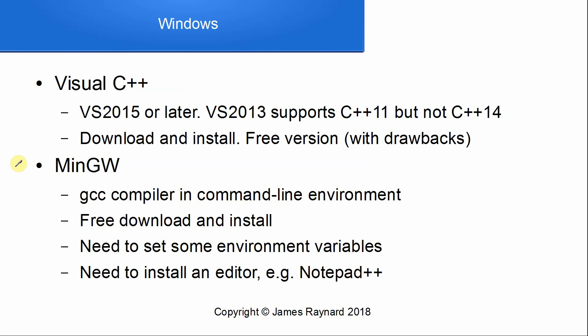There are other commercial products for Windows as well, but the main alternative is to get a free open-source compiler designed for a Unix environment and then get a supporting environment to run it in. MinGW is the main one — there's also something called Cygnus. MinGW gives you the GNU C++ compiler, which is a very good compiler, and it runs in a command-line environment where you type commands into a shell. You can download and install this free of charge; there's a website for MinGW with all the instructions.